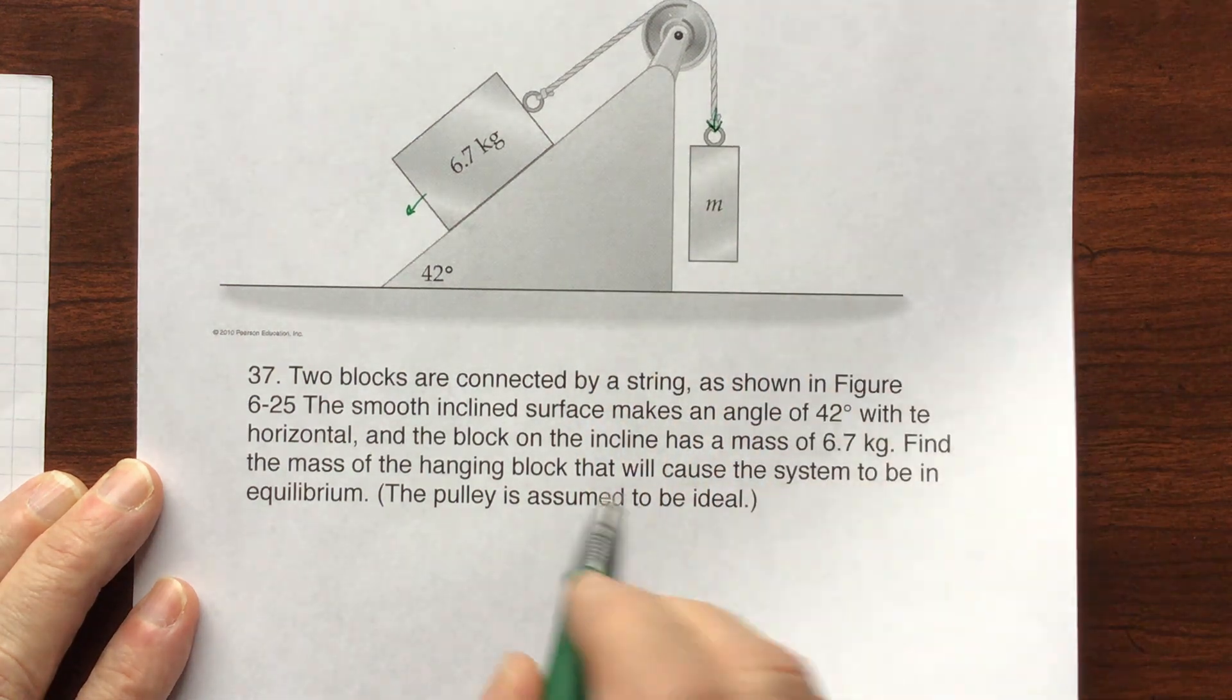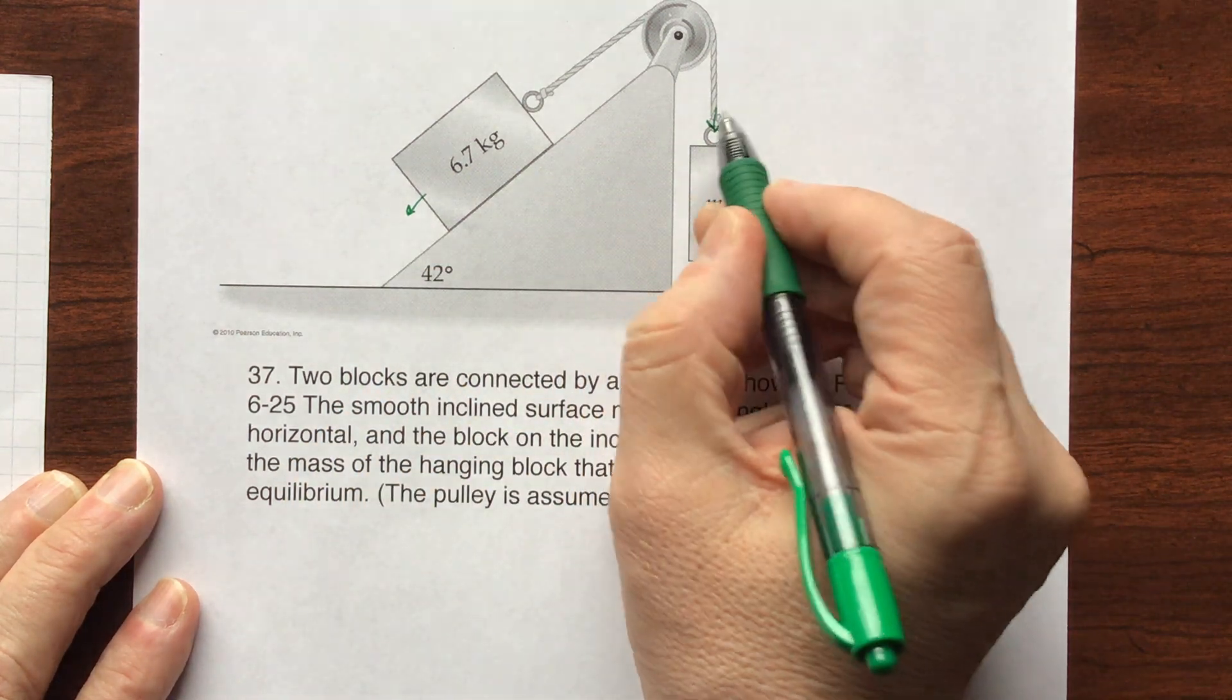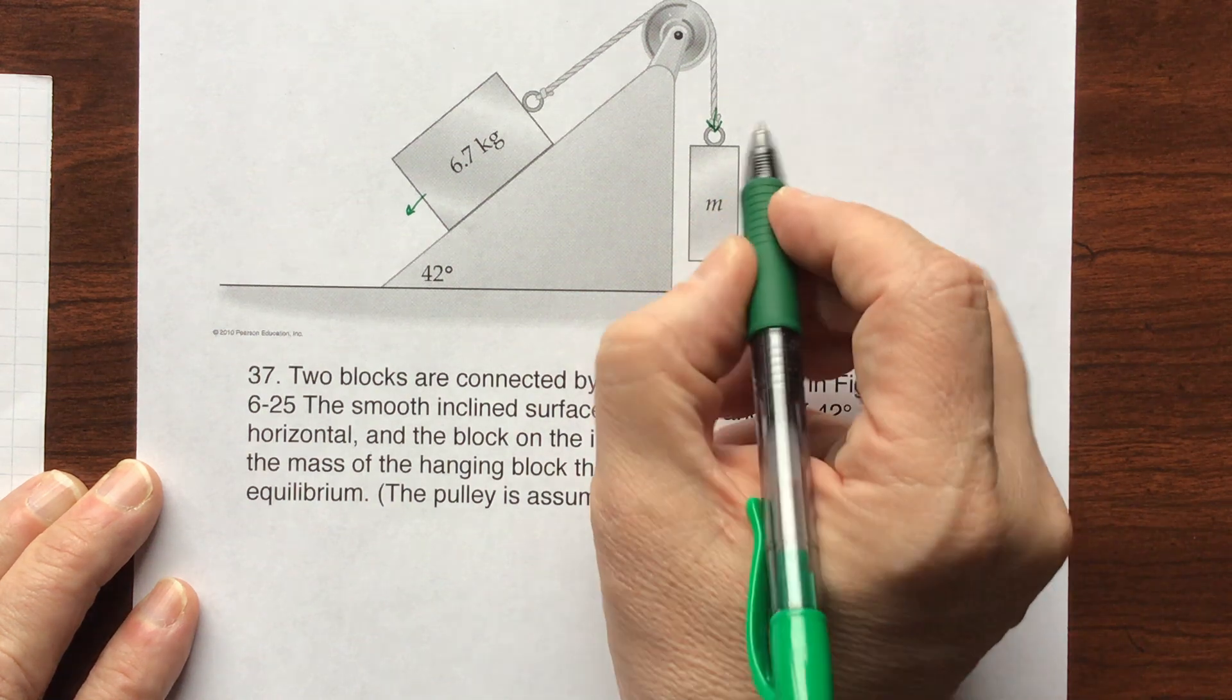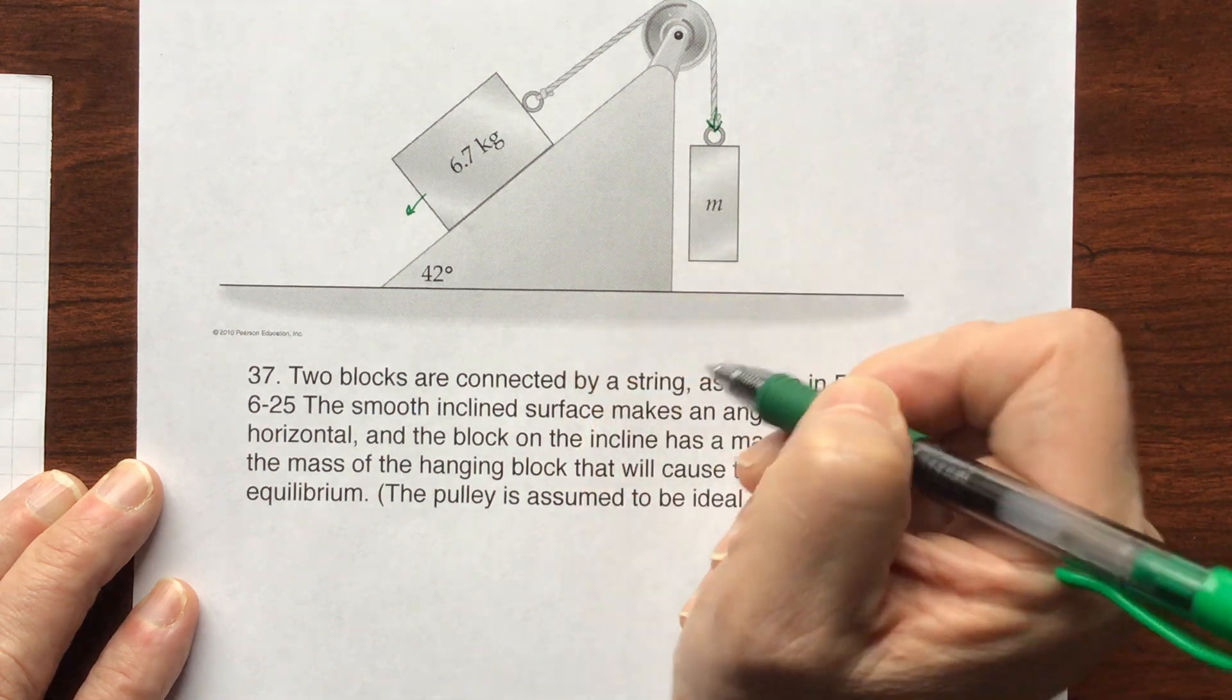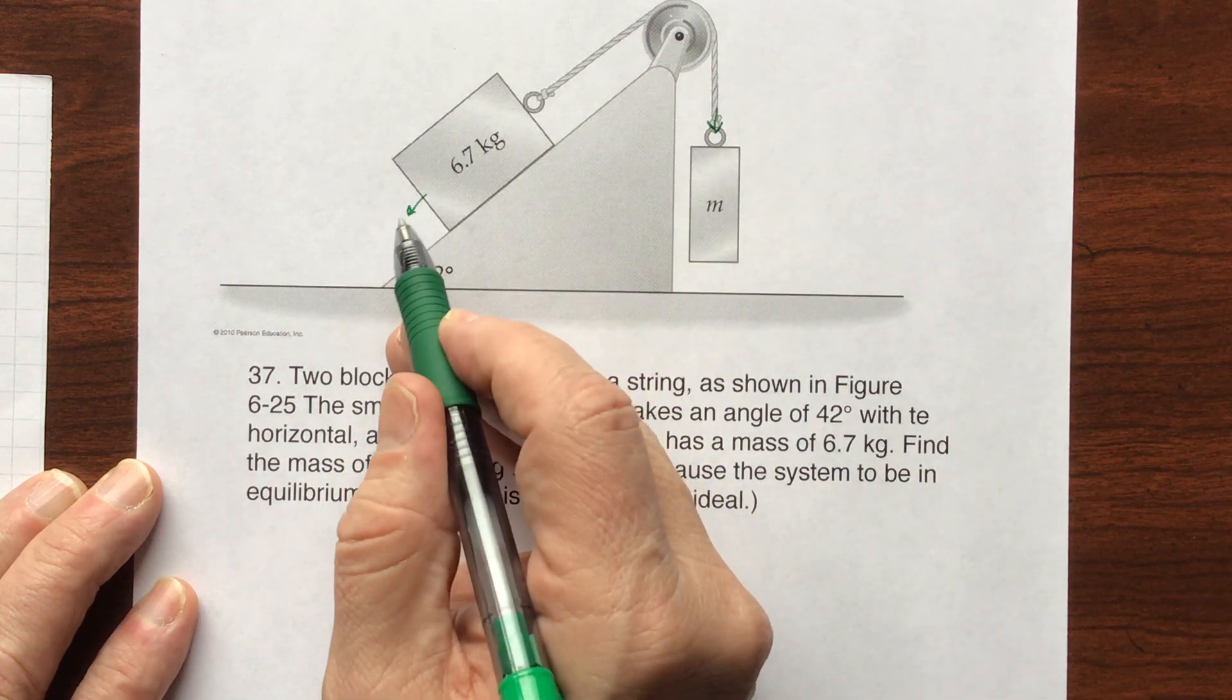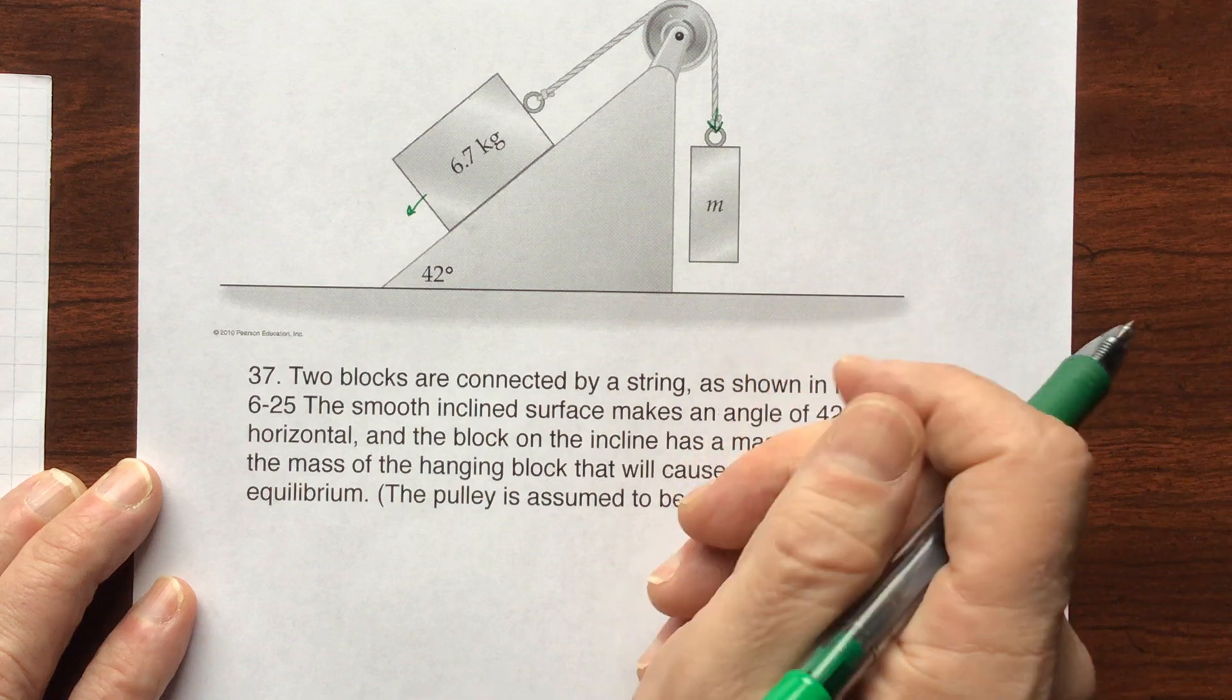Okay, so this will be in Newtons, and if I just want m, I'm just going to divide by gravity because kilograms times 9.81 meters per second squared is weight. So I'm going to first find out what this component is, find out what the Newton force of that is, this will be equal, then divide by gravity, and I should have my kilograms.